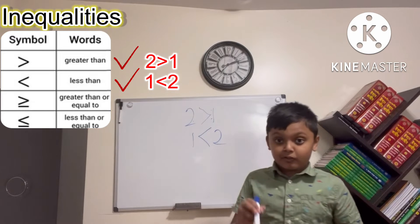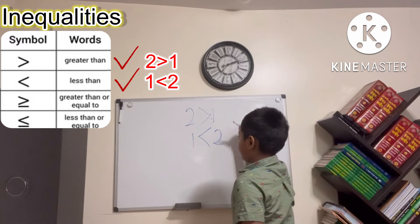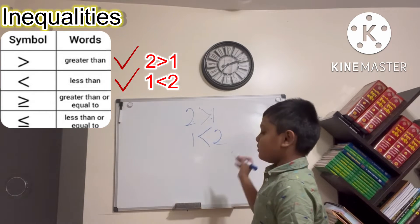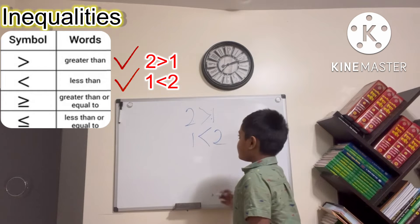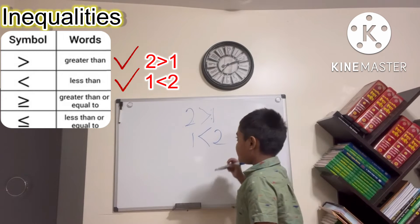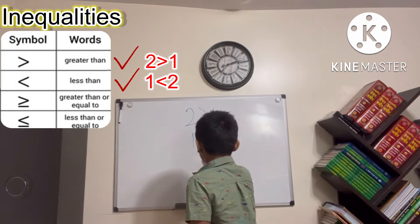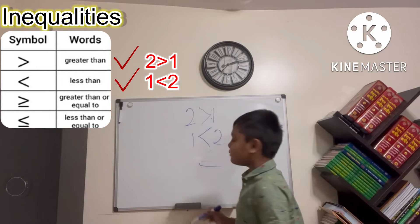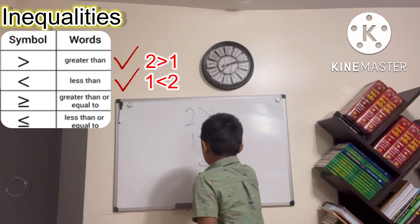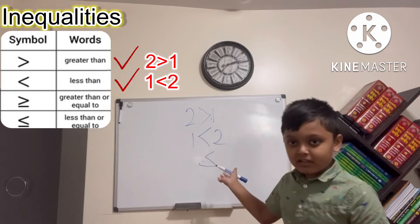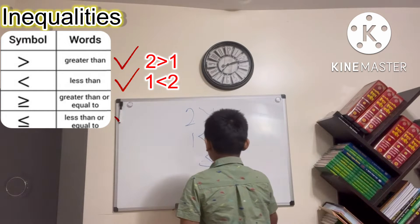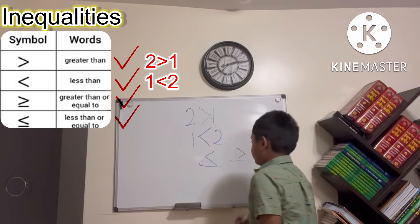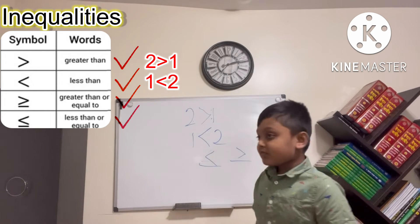The greater than and less than symbols are like each other but backwards, and the numbers are also reversed — two is greater than one, and one is less than two. There's also the less than or equal to sign, which has a line under the less than symbol, and the greater than or equal to symbol.